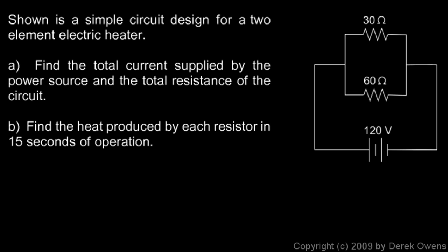In this problem we're shown a simple circuit designed for a two-element electric heater. The way this might work is there's a switch that could allow current to flow through one of these heating elements or the other one or both. So there might be three settings: on low it runs through one element, on medium it runs through a different heating element that makes more heat, and then on high the current flows through both of them.